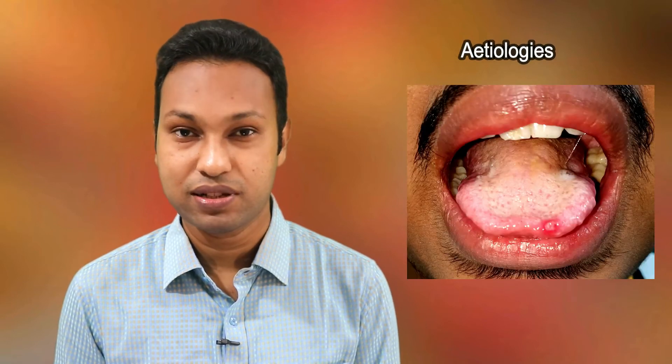So tongue ulcers may be due to a variety of etiologies. Number one, acute traumatic ulcer. Number two, chronic traumatic ulcer. Number three, aphthous ulcer. Number four, pemphigus or pemphigoid. Number five, viral infection. Number six, squamous cell carcinoma. Number seven, syphilitic chancre. Number eight, tuberculosis. Number nine, Behcet's disease. And number ten, it may be due to some granulomatous conditions like Wegener's granulomatosis.